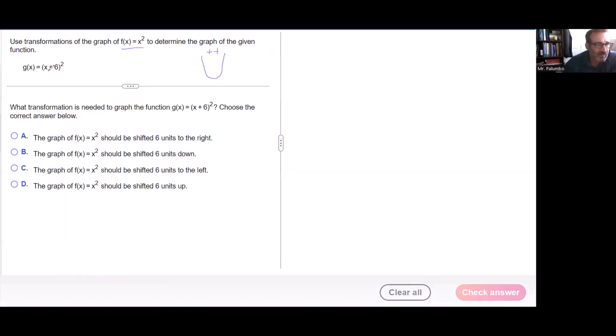And g(x) is (x + 6) squared. Now this 6 right here is our transformation. You notice that it's inside the parentheses with the x, which means it's going to shift it on the x-axis. It's going to shift it right or left.